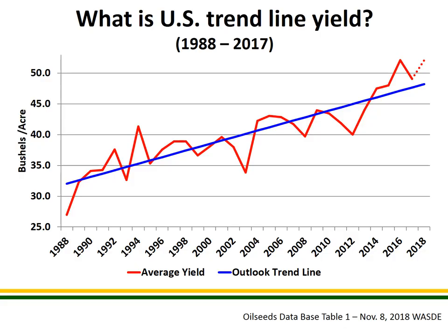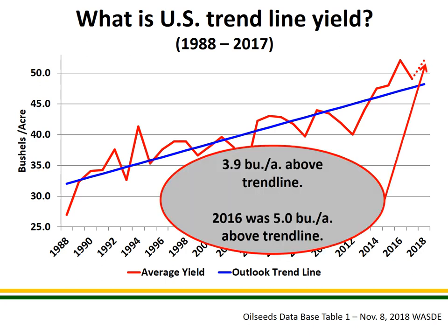To put this in historical perspective, the red line represents the historical national average yield for soybeans, while the straight blue line is the trend line yield — the average yield adjusted for technology and better farming practices. The current yield estimate is approximately 3.9 bushels per acre above trend line, which is about 10% above average yields. We have seen higher yields in the past — for example, in 2016 we were nearly five bushels above trend line — but these yield forecasts are still very strong, even though they were lower than last month.